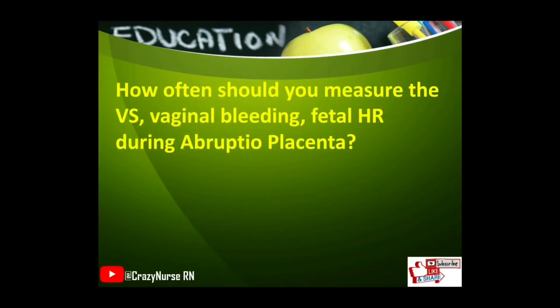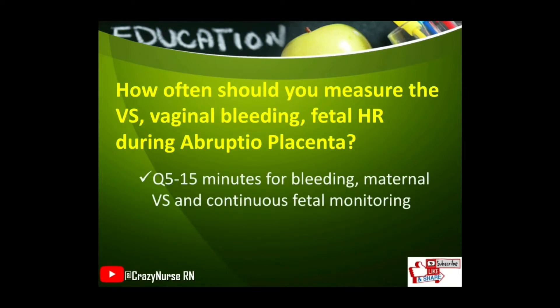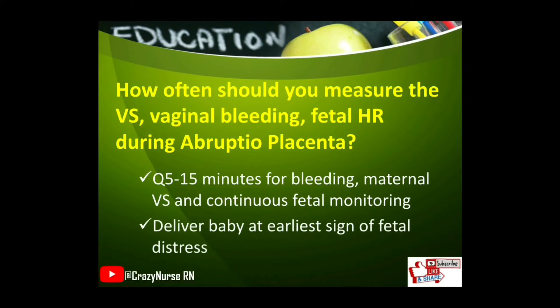How often should you measure the vital signs, vaginal bleeding, and fetal heart rate during abruptio placenta? Every 5 to 15 minutes for bleeding and maternal vital signs, and continuous fetal monitoring. Deliver baby at earliest sign of fetal distress.